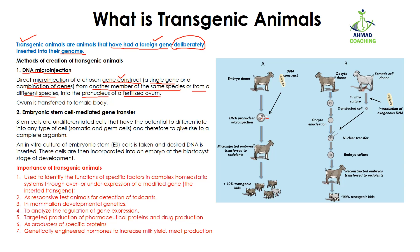The micro injections are very small injections. Here you can see them injecting the desired DNA into the nucleus. After that, this ovum or egg is transferred to the female body, where it converts into an embryo and then into the baby. In the next generation, what you are going to get are animals having this gene inserted in them — meaning you now have transgenic animals.